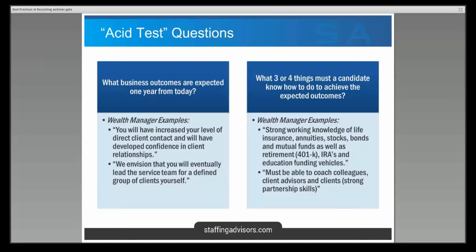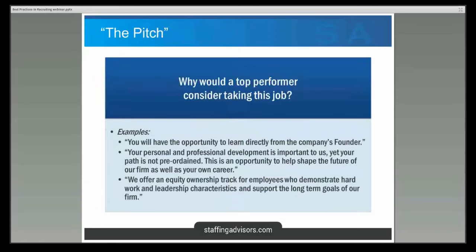Laundry lists of 20 qualifications mean nobody really knows what's important. But if you narrow it down to the top two or three business goals and the top three to five things a candidate needs to know, they can get a sense of whether your job is at the right scale for them — whether they outgrew it five years ago or aren't ready for it for five more years. The more specific you are, the more people can see themselves in the job.